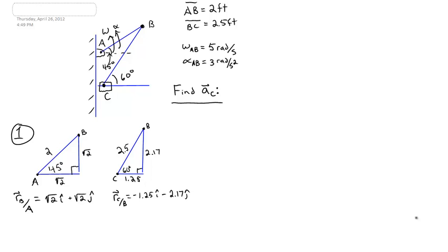Now we have the geometry of each link. And we know the vectors R_B with respect to A and R_C with respect to B, which we will use in calculating the relative velocity and acceleration equations.